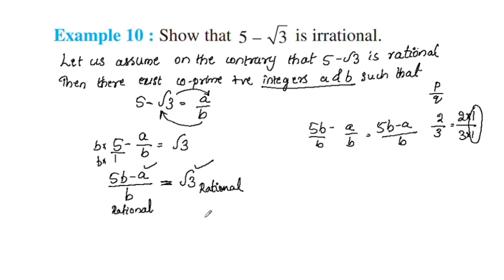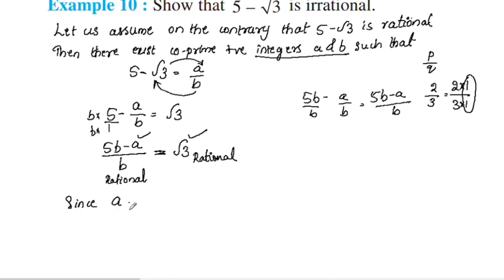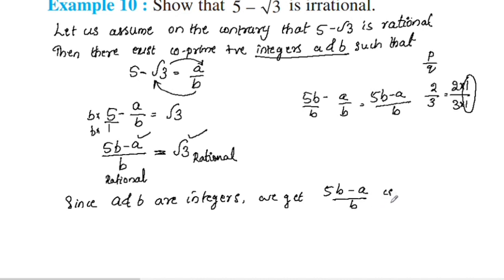Since a and b are integers, 5b minus a by b is a rational number. But this means root 3 would be rational.